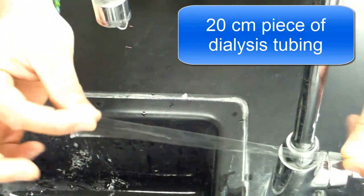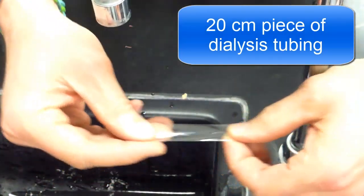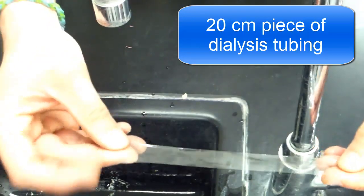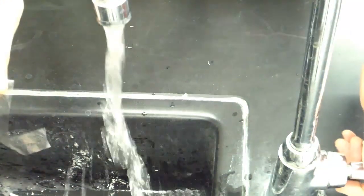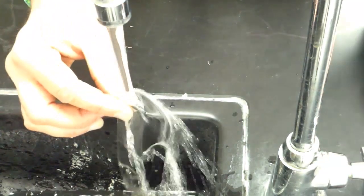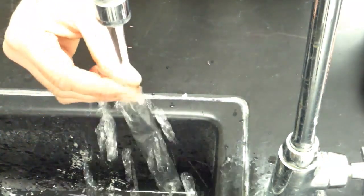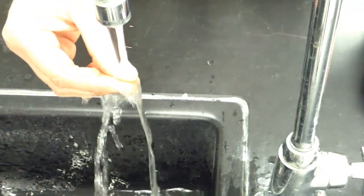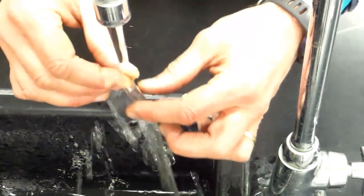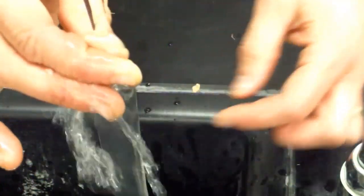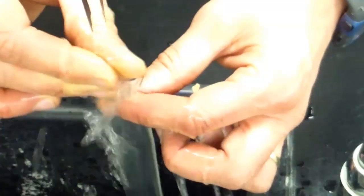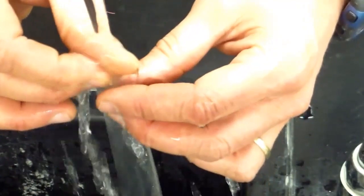The first thing you want to do is you want to get a 20 centimeter long piece of dialysis tubing. Now, it appears like it's a piece of plastic, but when you wet this, take it to a sink, turn on the water, and let it run under the water. And very quickly, it will get soft and pliable. And what you want to do is you want to rub it between your fingers and pretty quickly it will start to open up. You'll see it start to move.